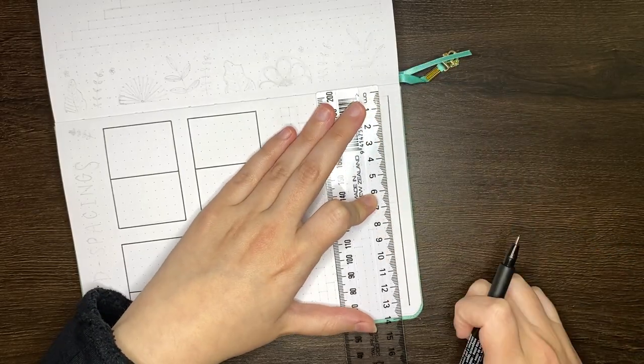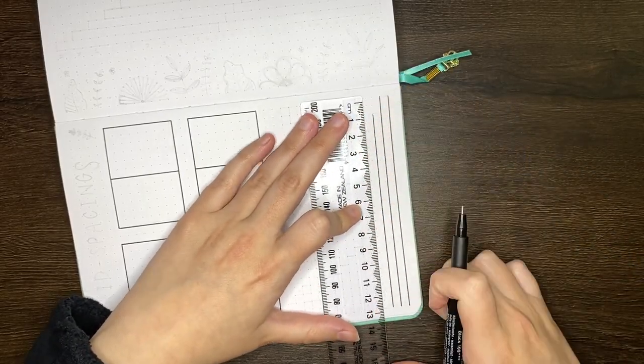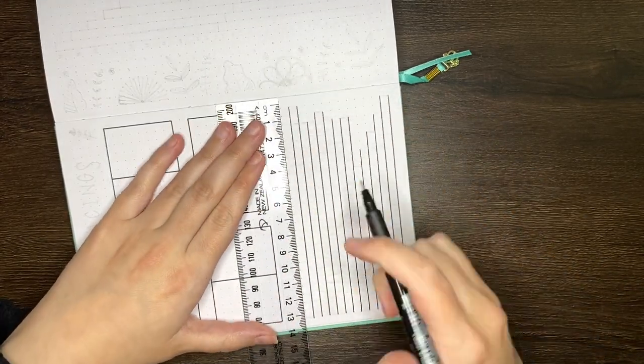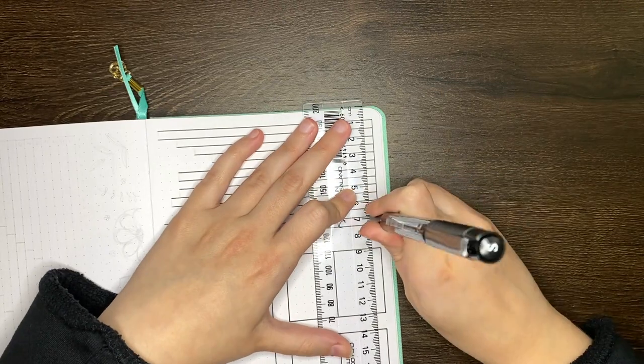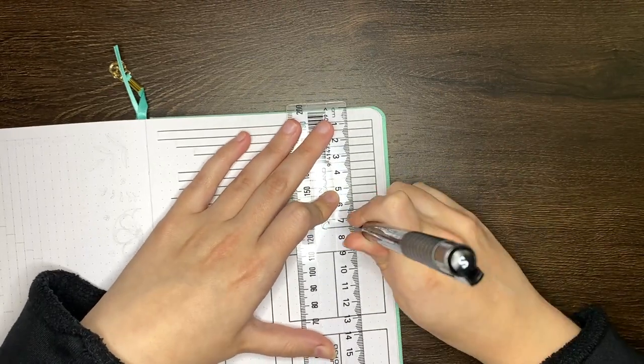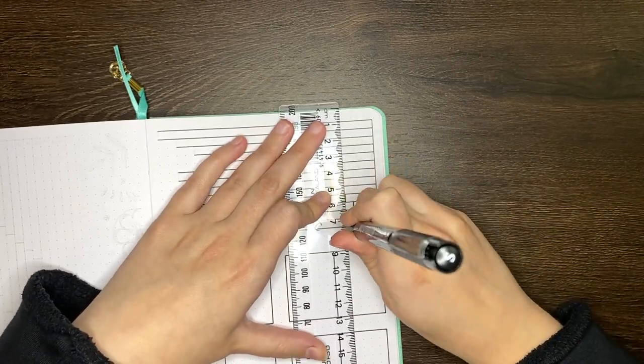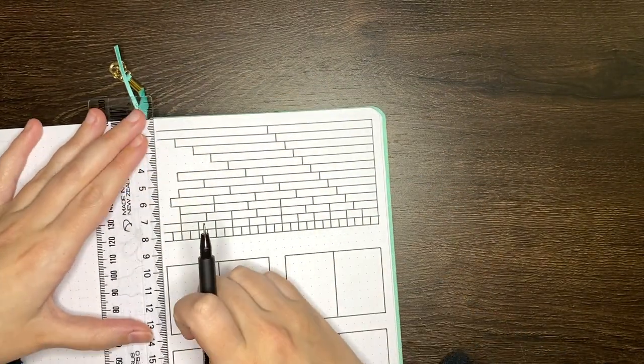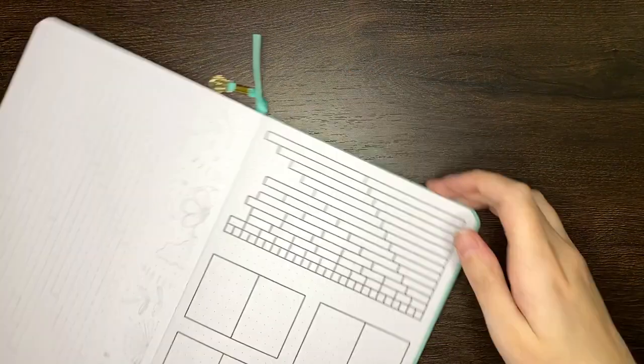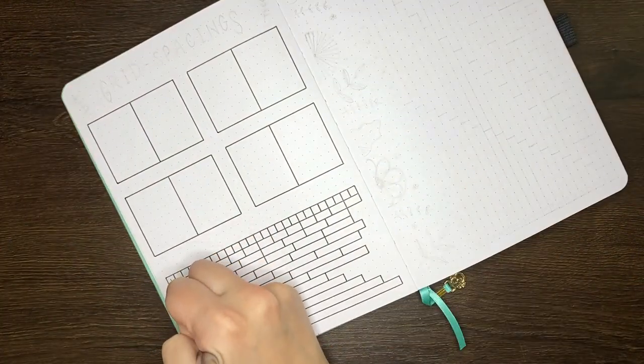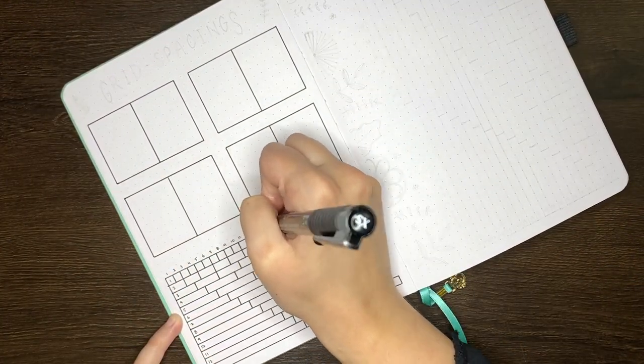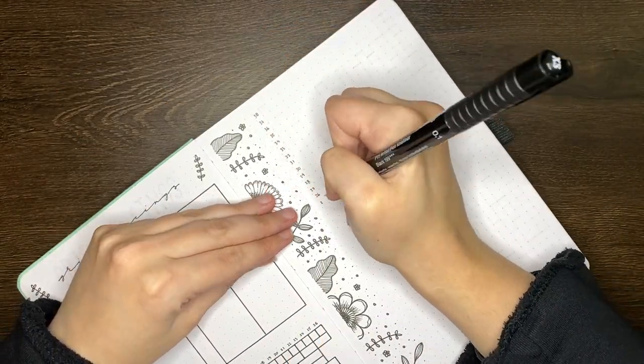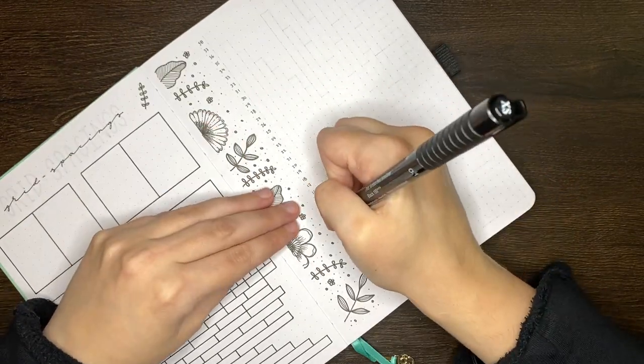For example in the giveaway bullet journal that I set up as part of a recent video, in that one rather than using lines to show how things could be divided I instead opted for rectangles. This was again done both vertically and horizontally as a way to show how many sections you can fit down and across a page when working with division sizes between one square and up to half a page in either direction. So for instance how many sections can you fit with boxes that are one square across or two squares across, three squares across, etc.